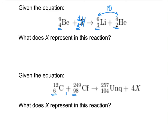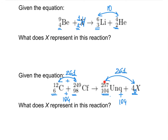For the final reaction, 6 + 98 = 104 for atomic numbers and 12 + 249 = 261 for mass numbers. X must have atomic number 0. For mass numbers, 257 needs an additional 4 to reach 261, and since there is a coefficient of 4 in front of X, each X has mass number 1. A particle with zero charge and mass number 1 is a neutron, so four neutrons are produced in this reaction.